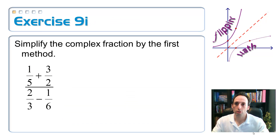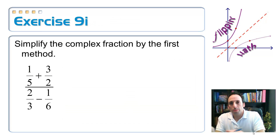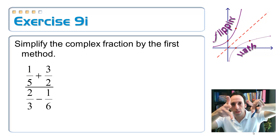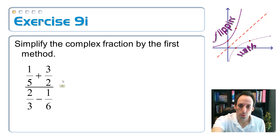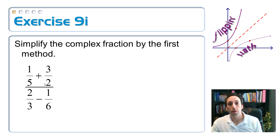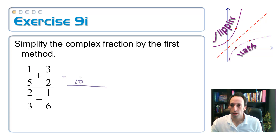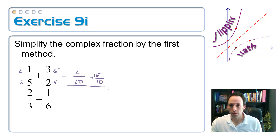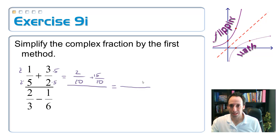First, we try Method 1 by simplifying the fraction on top, the fraction on the bottom, then turning this into a division problem multiplying by the reciprocal. Across the top, the common denominator is going to be 10. I need to multiply 1/5 by 2 and 3/2 by 5, giving me 2/10 plus 15/10. I'm just working with the top here, so adding up gives me 17 over 10.